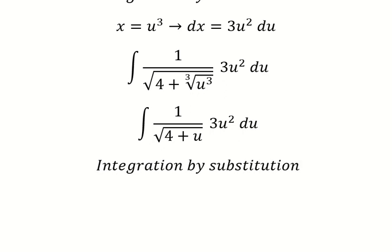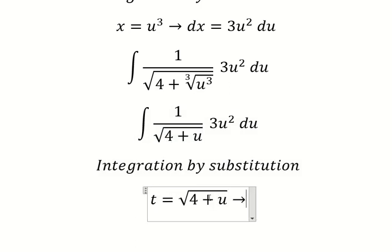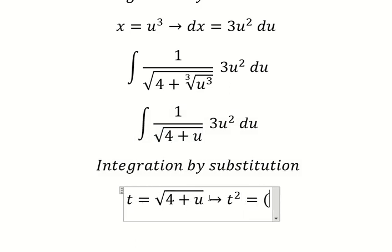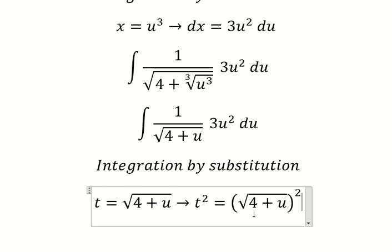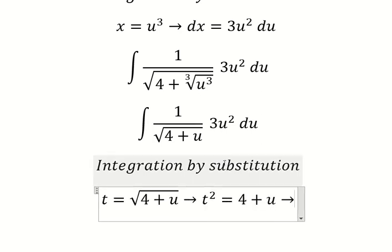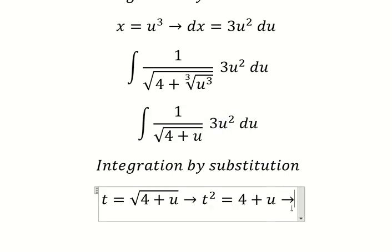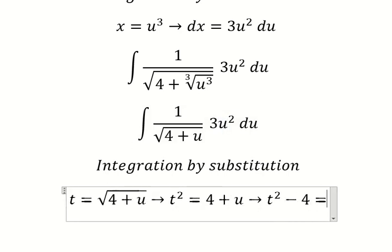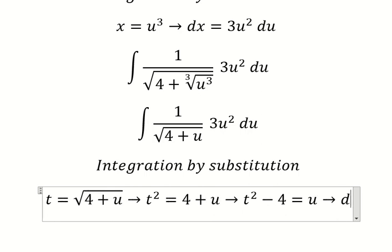I will put t equals to this one, then we put the power of two for both sides to cancel the square root. Because we have u, we put the number four over to the left. Then we need to do first the differential for both sides.